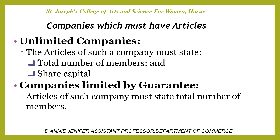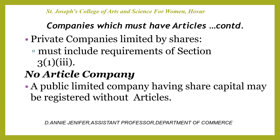Companies which must have Articles of Association include: unlimited companies — the articles of such companies must state the total number of members and share capital; companies limited by guarantee — the articles of such companies must state the total number of members; and private companies limited by shares — which must include the requirements of Section 3, Sub-section 1, in their articles. A public limited company having share capital may be registered without articles.